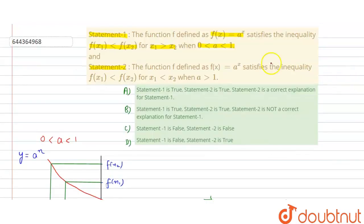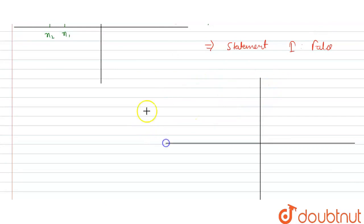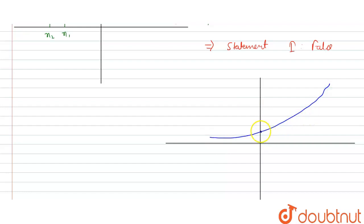Now for Statement 2: the same function but with a greater than 1. We make the graph of y = aˣ when a is greater than 1. This graph is an increasing exponential curve starting from the point (0, 1) and going upward.